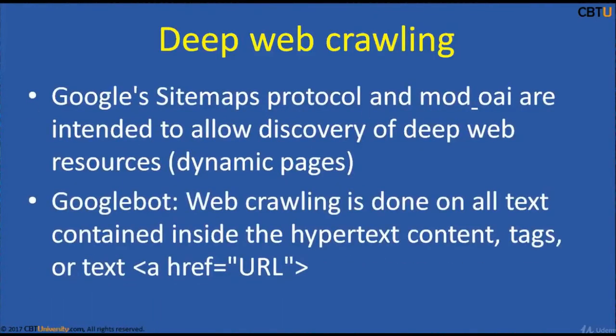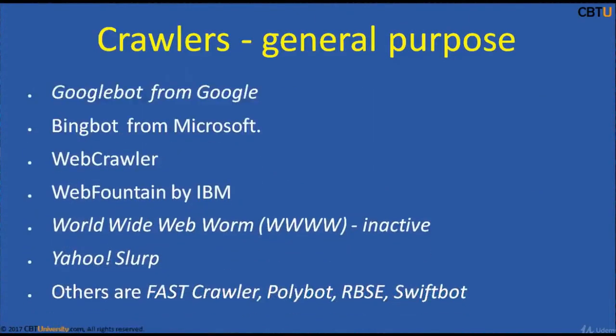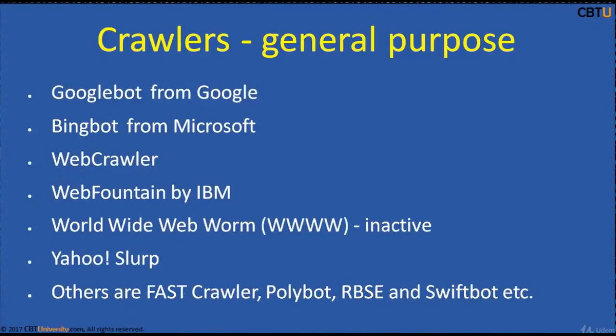Deep web crawling: Google Sitemaps protocol and mode UI are intended to allow the discovery of deep web resources, i.e., dynamic pages. Googlebot web crawling is done on all the text contained inside the hypertext content tags and href links.